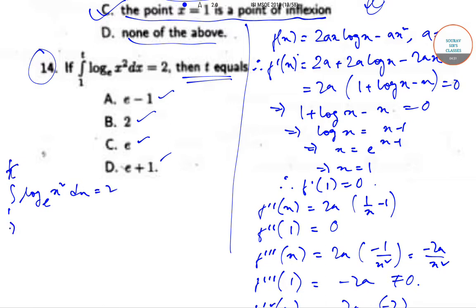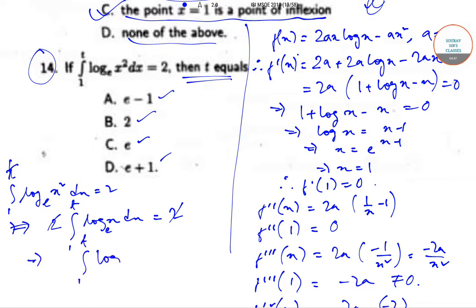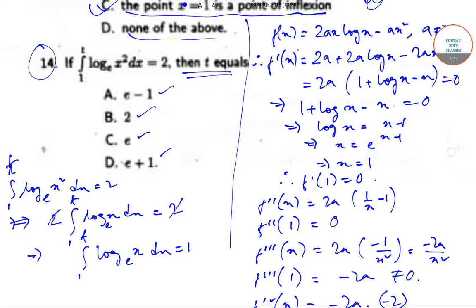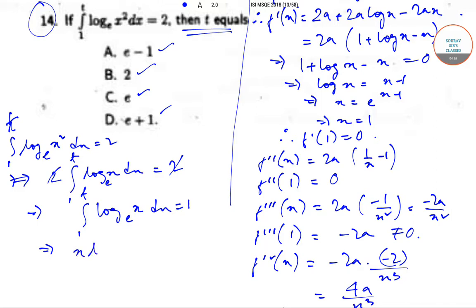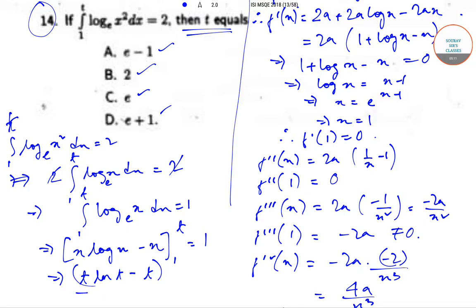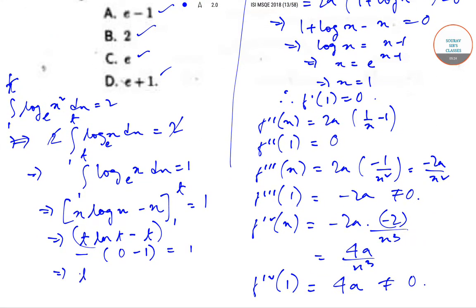We are given that the integral from 1 to t of log(x²) base e dx = 2. Since log(x²) = 2·log(x), this becomes 2·∫₁ᵗ log(x) dx = 2, so ∫₁ᵗ log(x) dx = 1. We know that the integral of log(x) is x·log(x) − x, evaluated from 1 to t, equal to 1. This gives t·ln(t) − t − (0 − 1) = 1, so t·ln(t) − t + 1 = 1, hence t·ln(t) − t = 0.